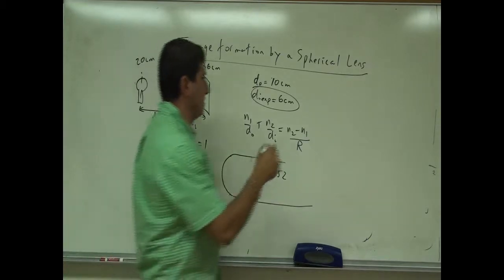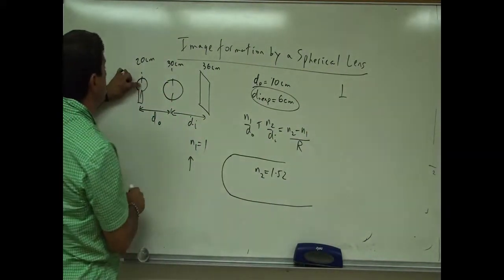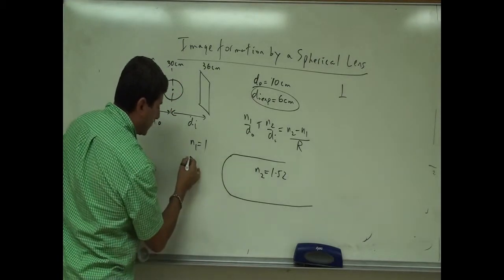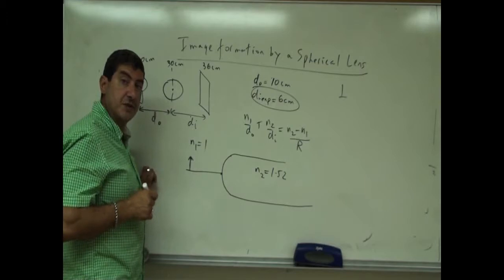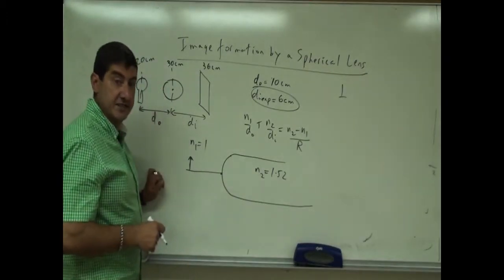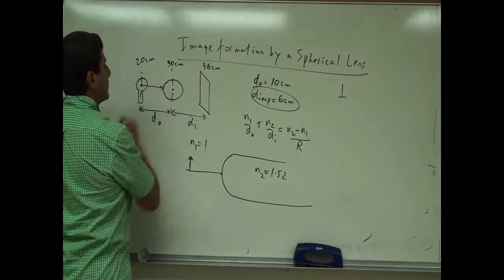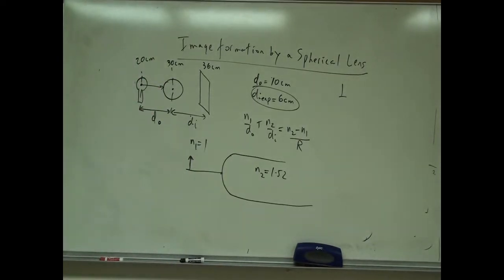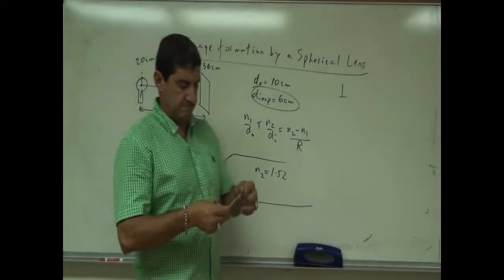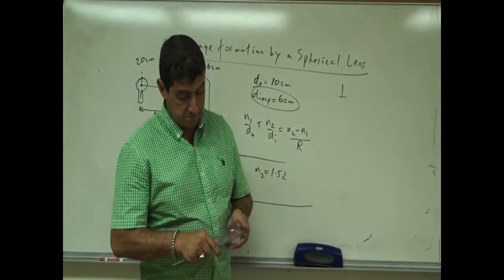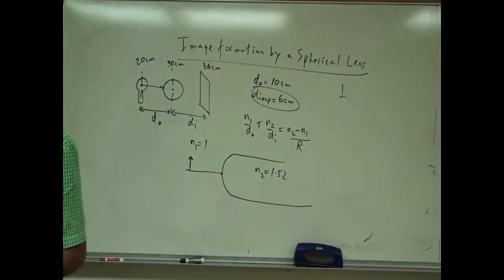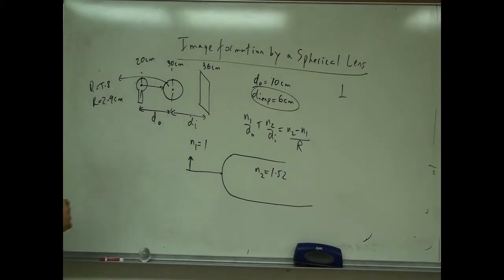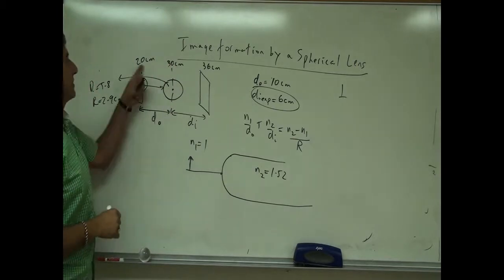In my case, N1 is 1.0. D-O is measured from the object all the way to the front of the lens — not to the center. From the light bulb to the center of the lens was 10 centimeters, but I have to count from the object to the front edge. I measure the radius of curvature of my lens with the vernier caliper. The diameter is 5.8 centimeters, so the radius of curvature is 2.9 centimeters. So D-O = 10 − 2.9 = 7.1 centimeters.